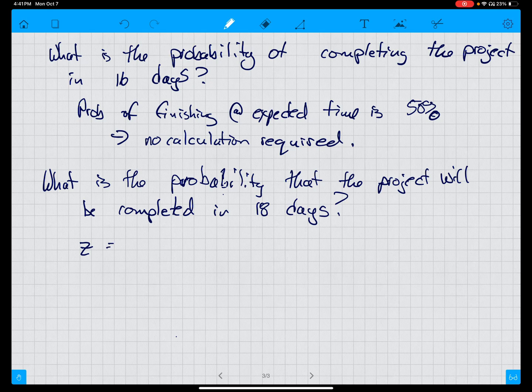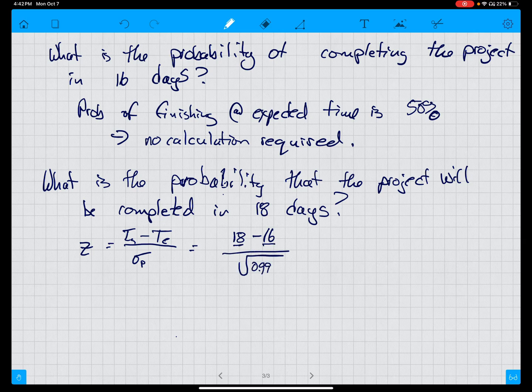In that case, we can calculate Z is equal to T target minus T expected over the standard deviation of project, which is equal to 18 minus 16, so this is the expected time, this is the target time, divided by the standard deviation, which is the square root of the variance is equal to, just people often forget this, that the standard deviation is a square root. That is something they forget all the time. 2 divided by 0.99.